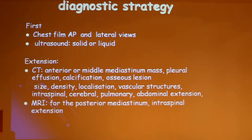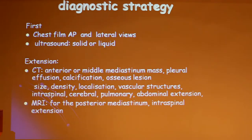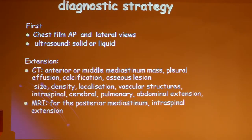This is the diagnostic strategy. First, we do AP and lateral views, and we determine if the mass is liquid or solid. After, we have to see the extension, so we can do a CT or an MRI. CT is for the anterior or middle mediastinum, and we can assess the localization and classification, the size, the density, the vascular structures, and the extension — cerebral, pulmonary, abdominal, and transpinal.